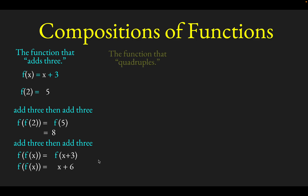We can think of another function that is the function that quadruples, which we'll call g of x. So g of x is just 4 times x — you just quadruple whatever you give the thing. So g of 2, we just quadruple the 2 and end up with 8.